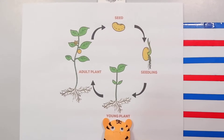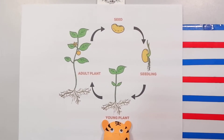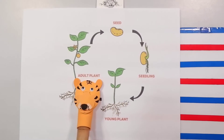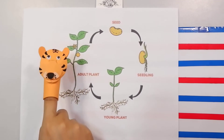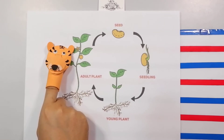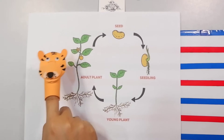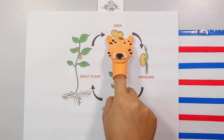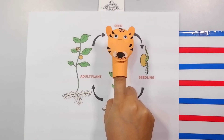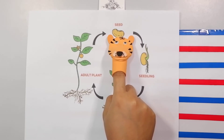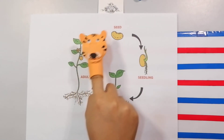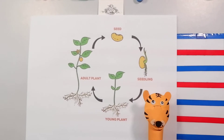But this young plant is not yet fully grown. It has to turn into an adult plant so that it could bear fruits and flowers. And from the fruits and flowers comes a new seed again. And then the plant life cycle starts to go again and again and again, making more and more plants.